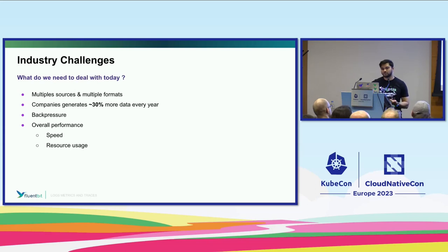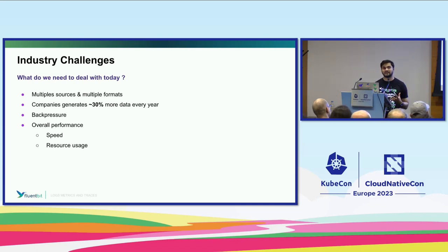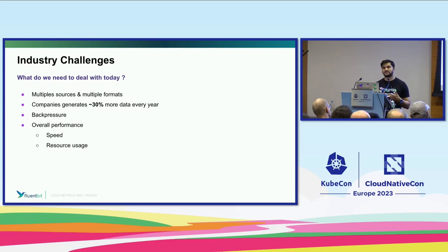The challenges we're starting to see: multiple sources, multiple formats, data is growing year over year. And not all of it should be treated the same way. Sometimes I'll accidentally put a console logger just to see it's working, but that's not useful for debugging, and if I accidentally leave it on it can generate tons of expensive data. Backpressure — where data is being generated faster than we can send it out. From a Kubernetes standpoint, we need to get more data off machines, resource utilization, speed, different architectures whether it's ARM or x86.